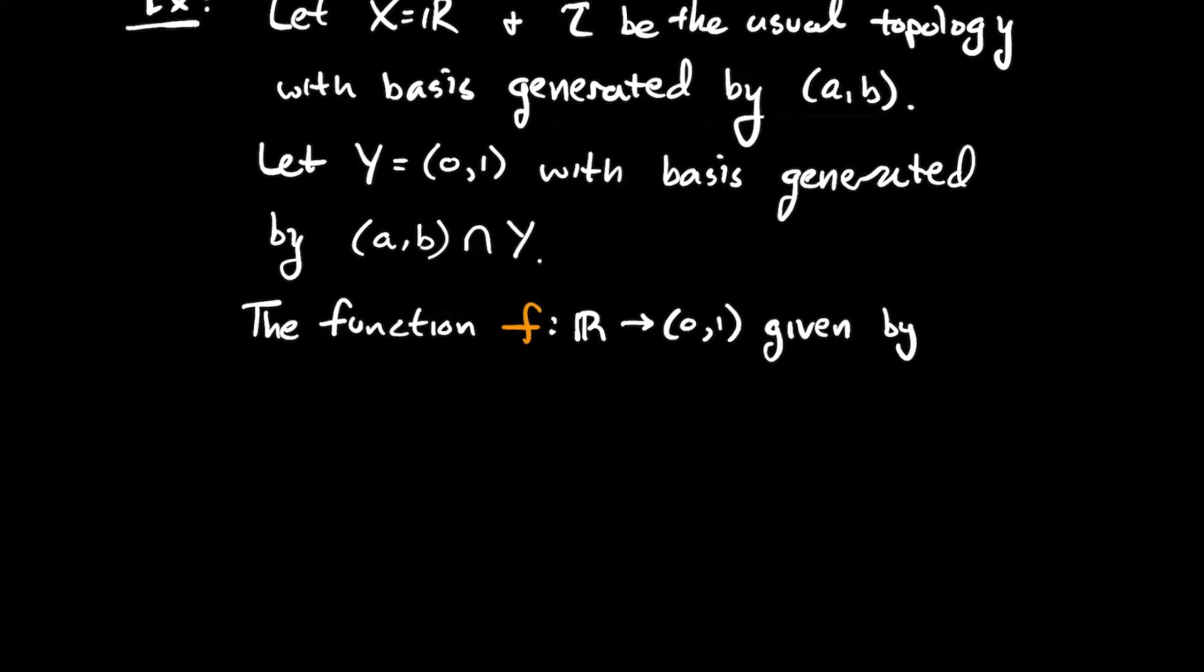Okay, so let's look at a concrete function, say from the real numbers to just this interval 0 to 1. Let's say it's given by 1 divided by 1 plus e to the x. So this is going to be a homeomorphism. So we're going to prove that the real line is homeomorphic to the interval from 0 to 1.